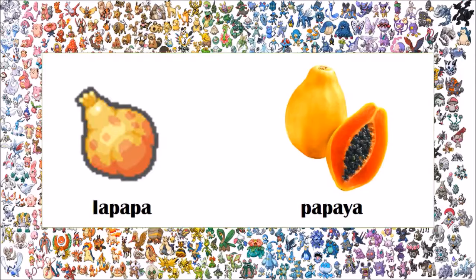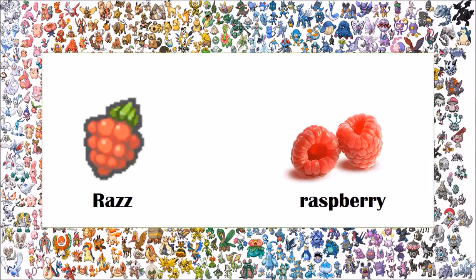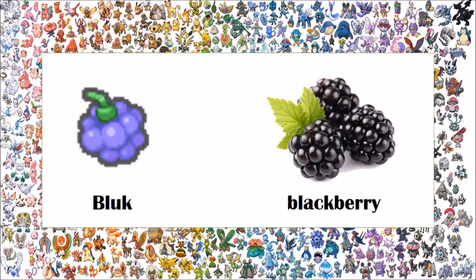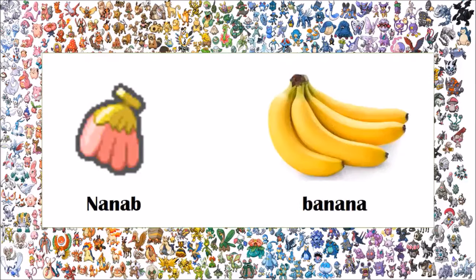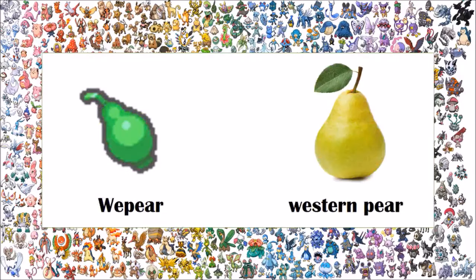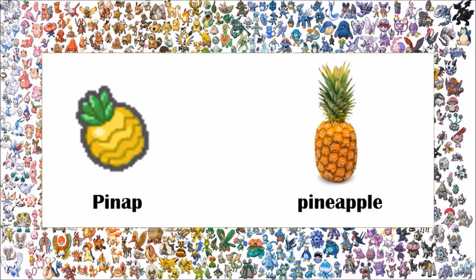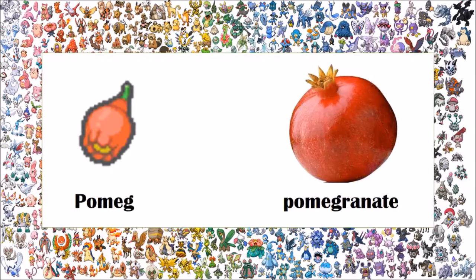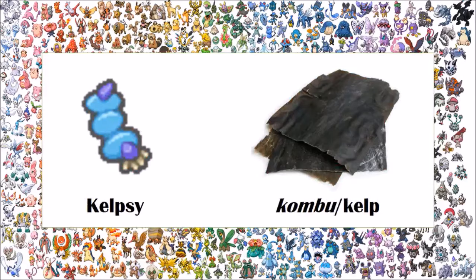It is interesting to note that the papaya will be returning because there is another fruit also based on the papaya. The Razz berry is based on the raspberry. The Bluk berry is based on the blackberry. The Nanab berry is based on the banana. The Wepear berry is a portmanteau of 'western pear', which is what it's based off of. The Pinap berry is based on the pineapple. The Pomeg berry is based on the pomegranate. The Kelsy berry is based on kombu, which is basically kelp or sea kelp, as the name is probably alluding to.